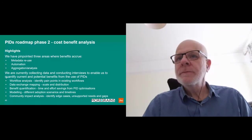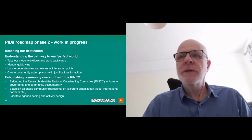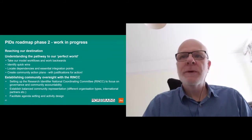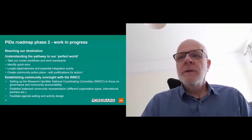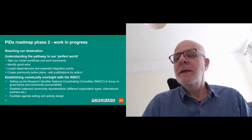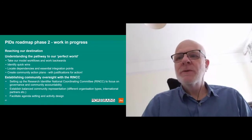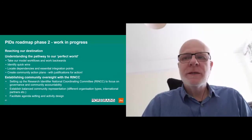Something that we're doing at the moment, coming up in the first meeting in May, is setting up the Research Identifier National Coordinating Committee — RINC. It focuses on governance and community accountability — a meeting in May, working with a number of organisations from the community to establish balanced community representation and facilitate agenda setting and activity design. There's also a poster, please have a look at that. Come along to the BOF tomorrow. There's a JISC booth if you want any further information on this. Credit to Josh for a lot of this work.